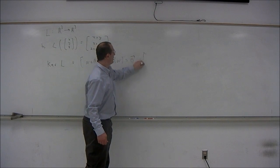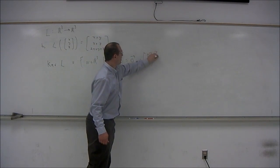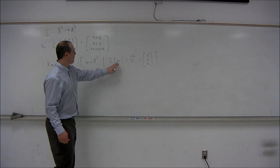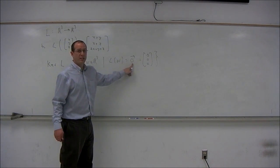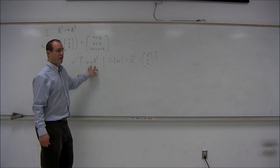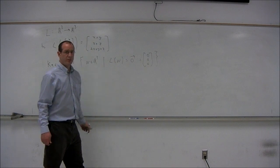which in this case is, in R3, the vector (0,0,0). In general, the kernel is all input vectors which give the zero vector as output. So in this case, the set of all vectors in R3 which yield (0,0,0).